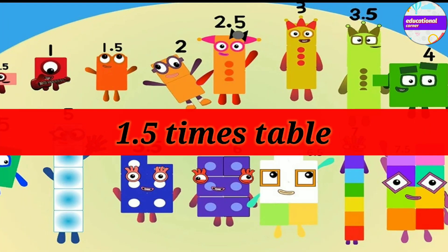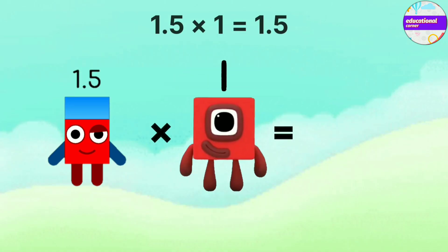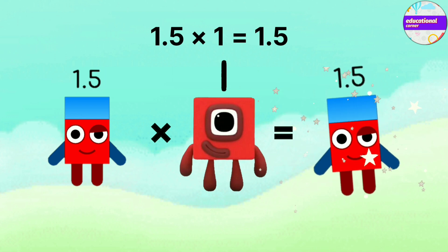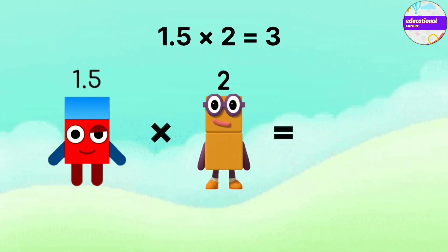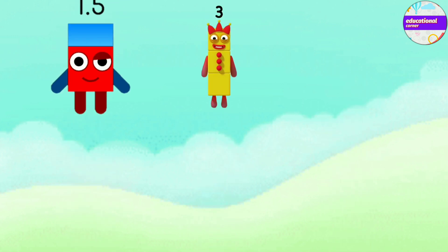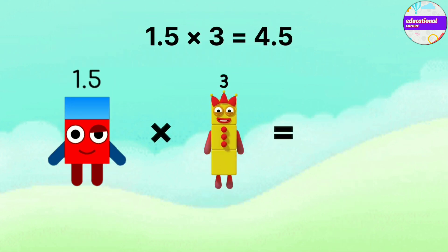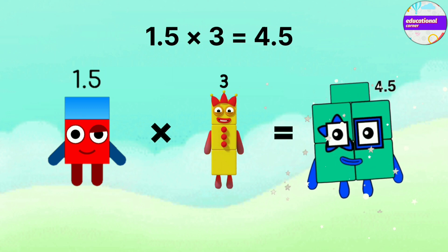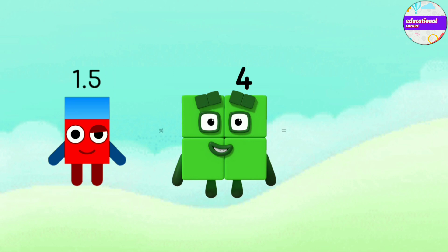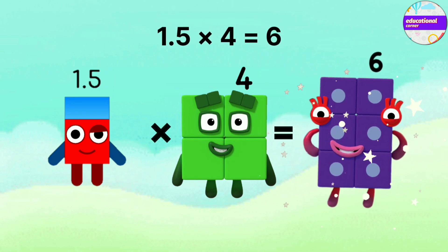Multiplication with 1.5. 1.5 x 1 equals 1.5. 1.5 x 2 equals 3. 1.5 x 3 equals 4.5. 1.5 x 4 equals 6.